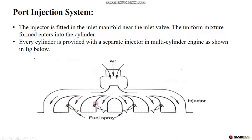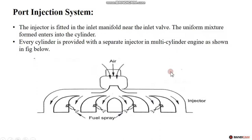Every individual port — as shown in this line diagram — has its own fuel injector. The fuel injection system sprays fuel directly at each port, and the inlet manifold assists in directing the mixture. This is the multi-point port injection system.